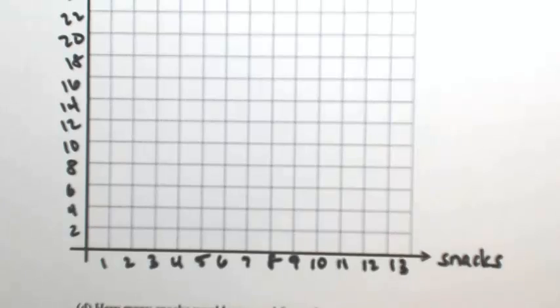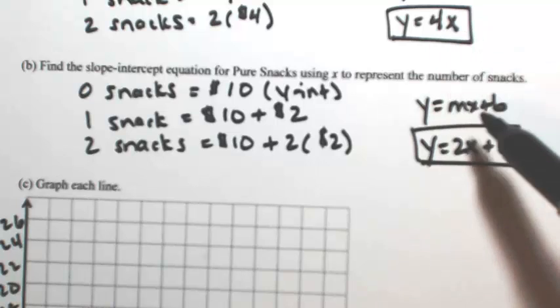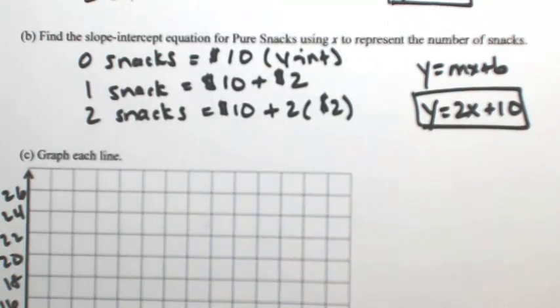The main reason I'm doing that is because if you look back at our equations, all of these slopes are over 1. So 4 over 1, 2 over 1, so that's why I'm going over 1.